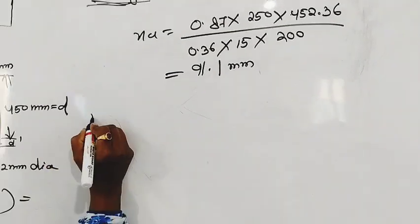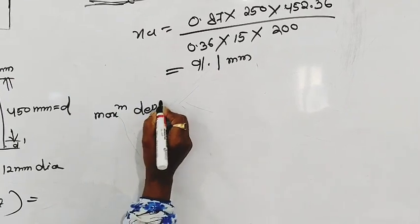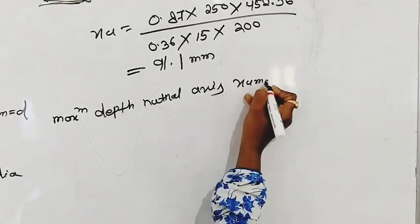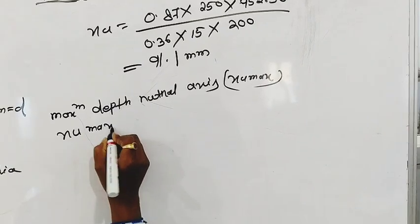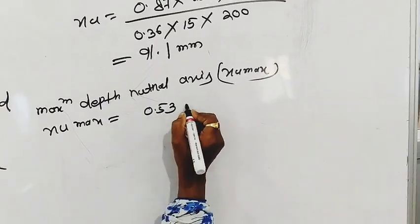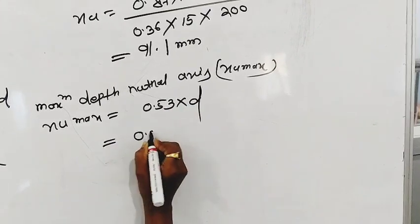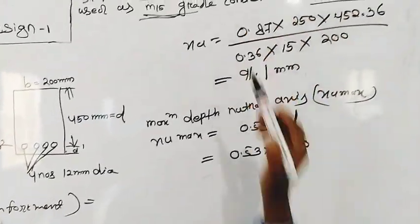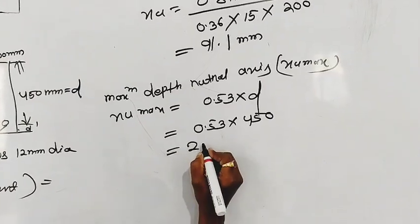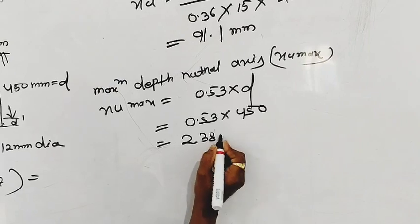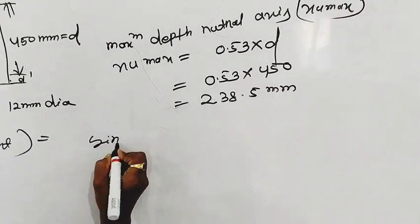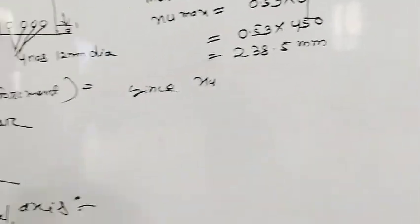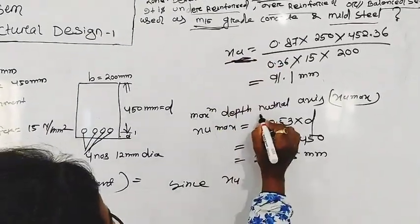Maximum depth of neutral axis: XU maximum equal to 0.53 into D, 0.53 into 450. XU is depth of neutral axis and maximum depth of neutral axis.